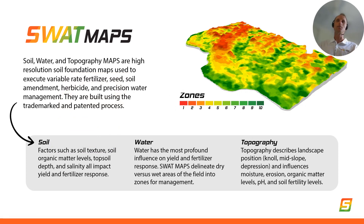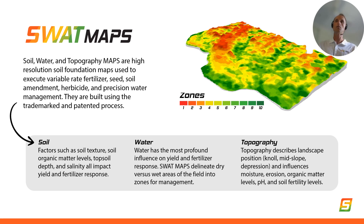First of all, I have to introduce SWAT maps, or soil, water and topography maps. SWAT maps are very high resolution soil foundation maps, or what we often refer to as soil potential maps, usually used to execute variable rate fertilizer, seed, soil amendments like lime, soil applied herbicides and occasionally even irrigation water. They are a patented process designed to use multiple layers of spatial soil and water and topography data to all go into a single soil management zone map.